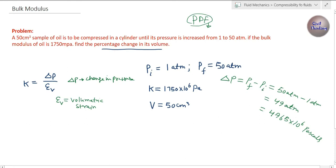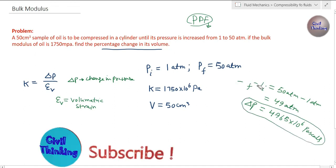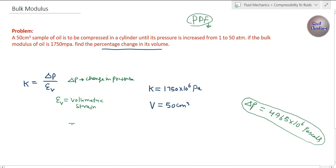We have the ΔP, the change in pressure. Now volumetric strain is change in volume Δv divided by original volume v.